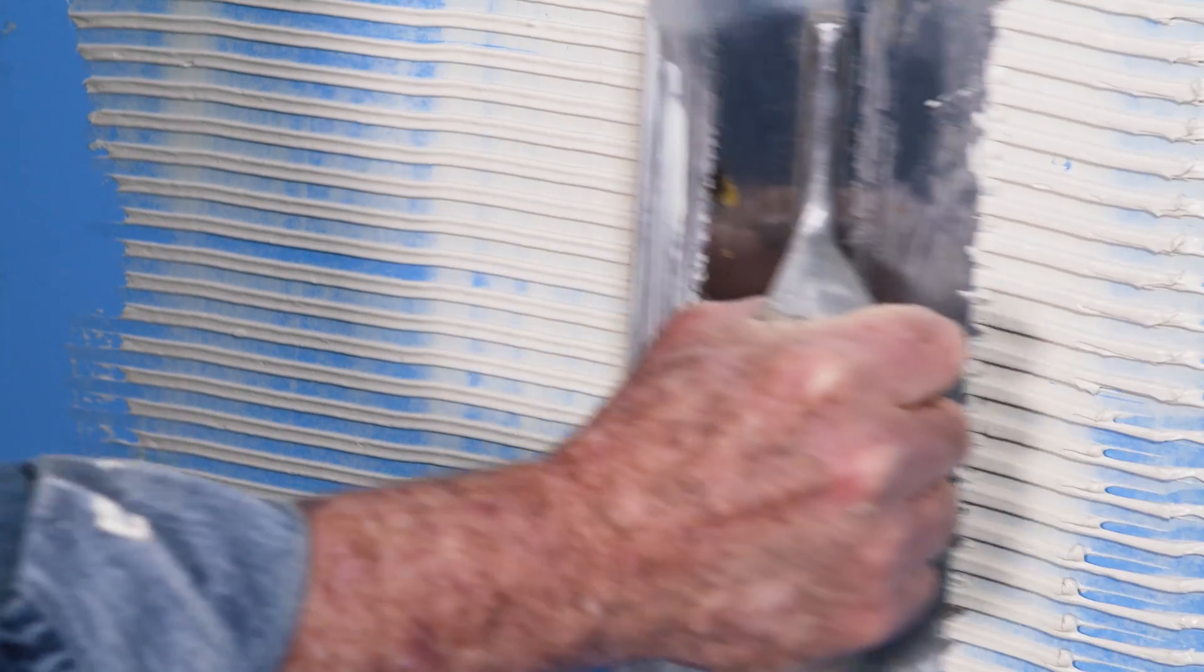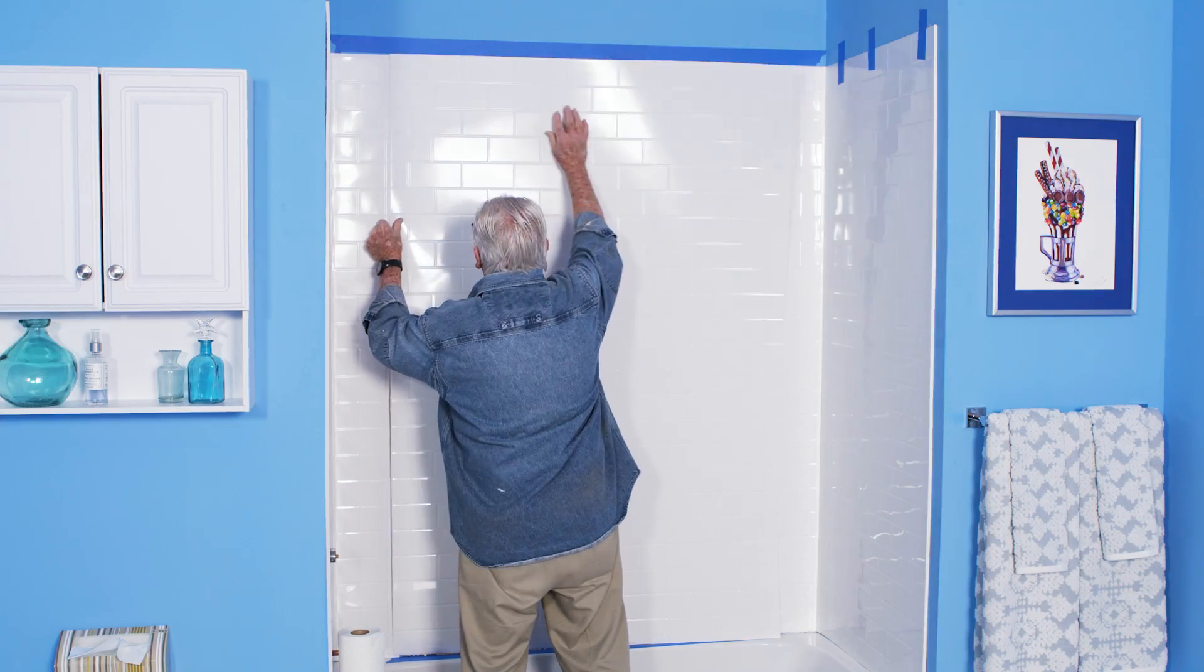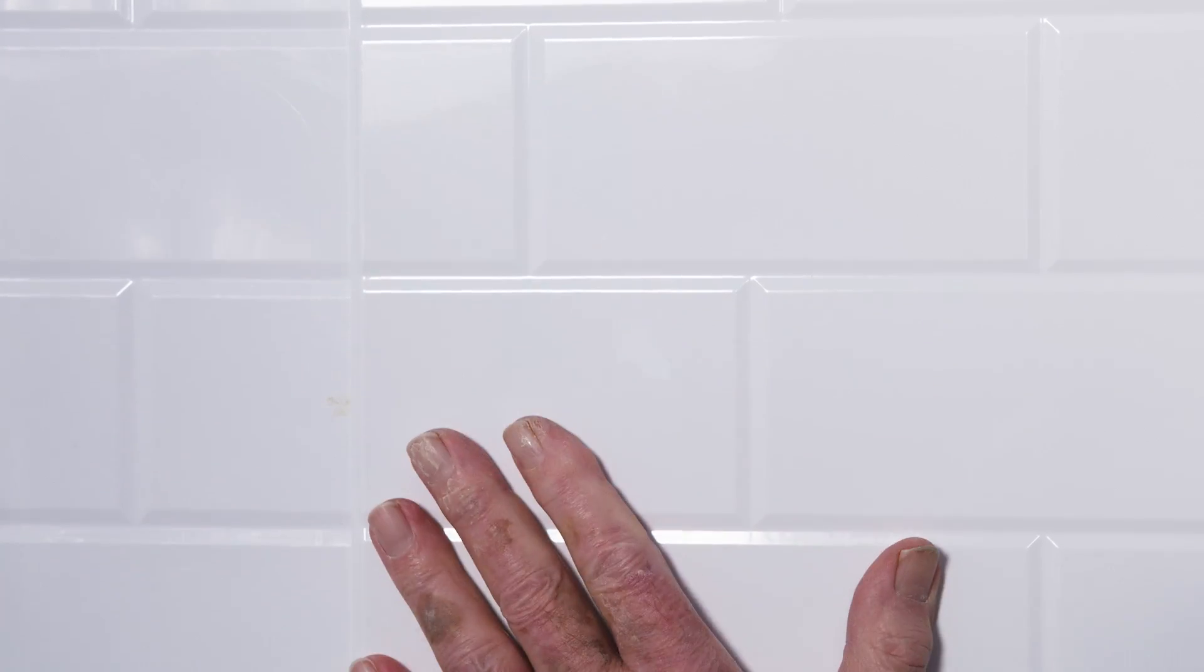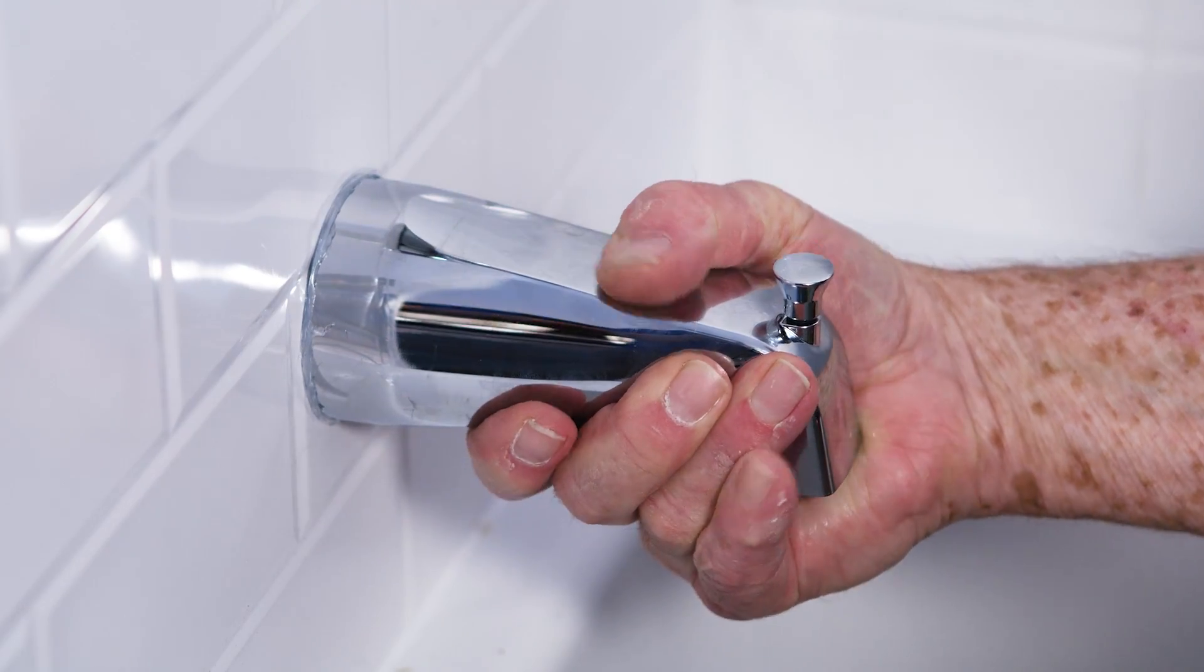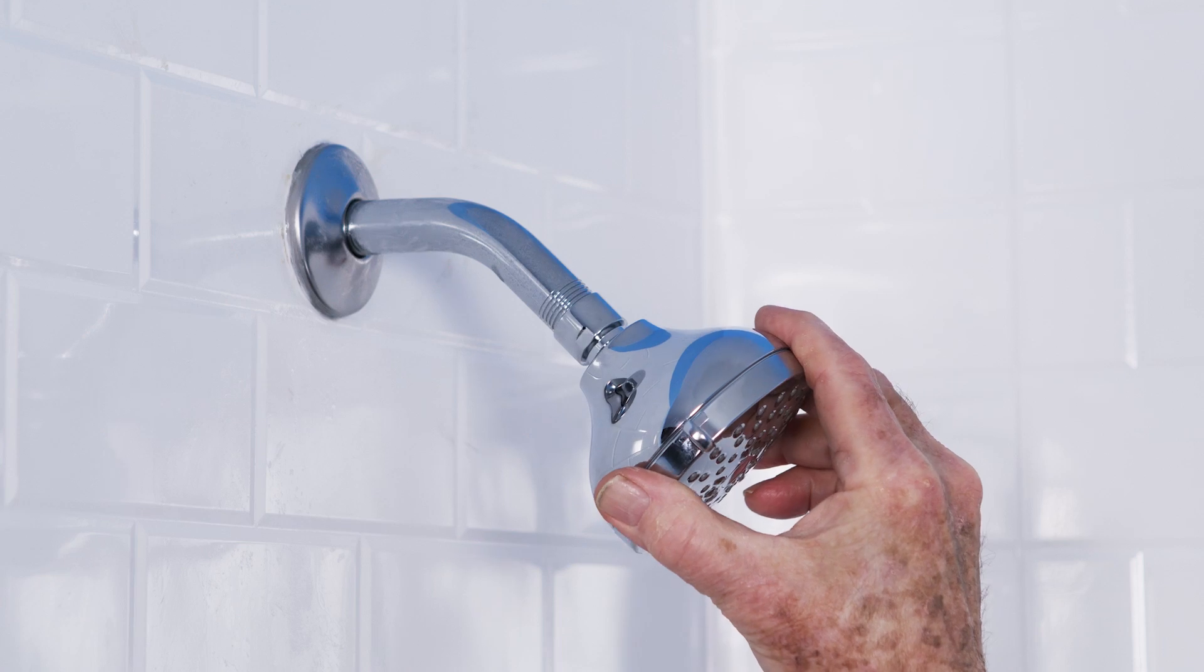Apply the adhesive to the back wall. Press the panel firmly into the adhesive. With the surround installed, it's time to replace the plumbing fixtures.